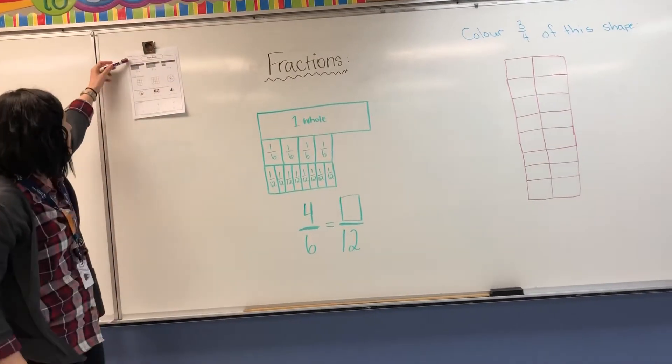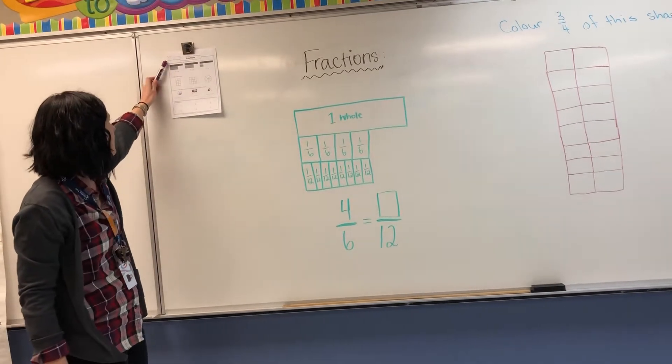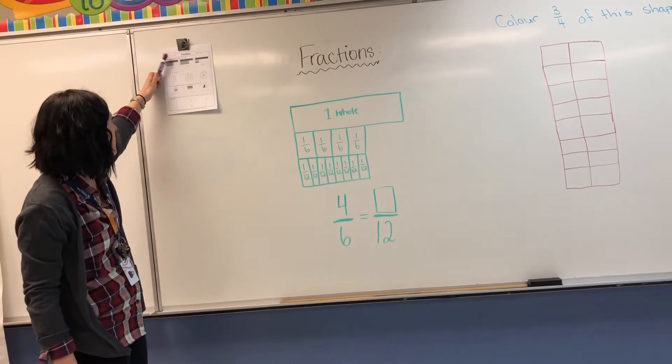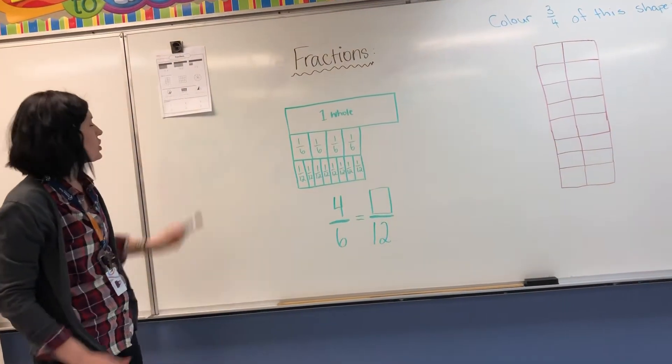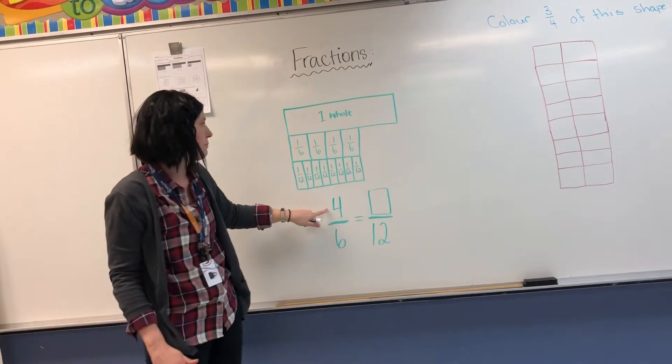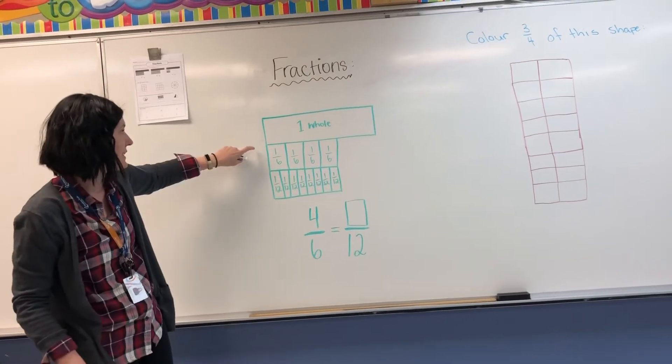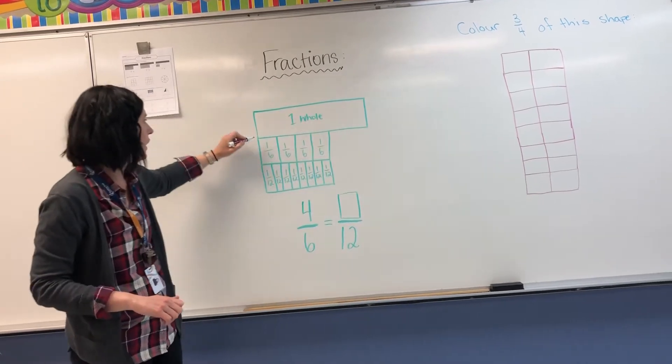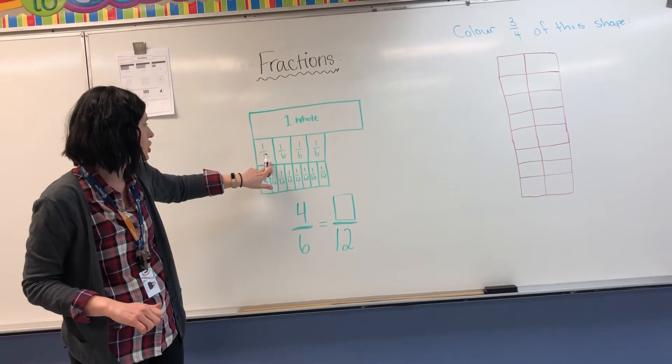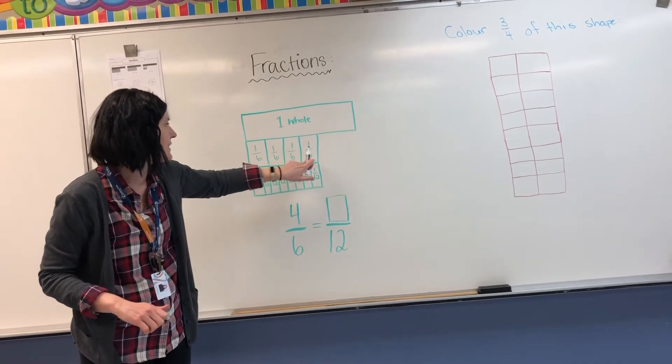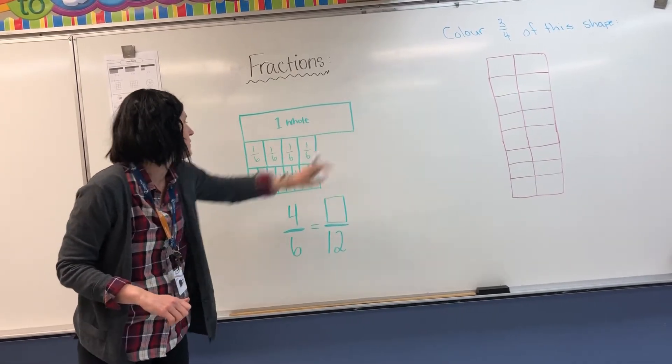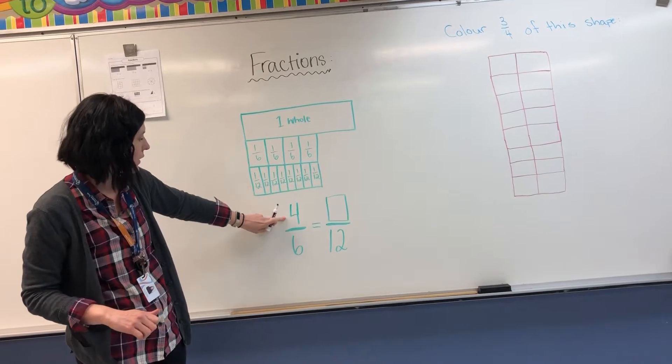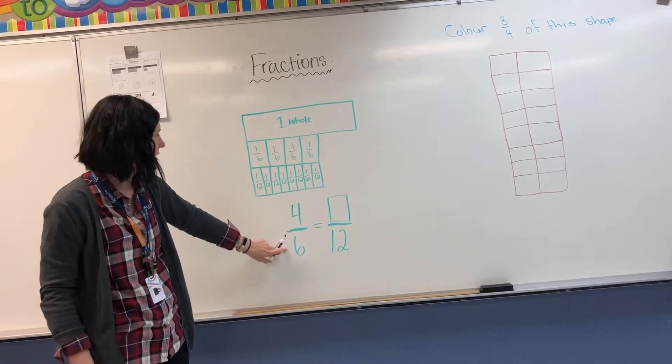If you're looking at the very top of the worksheet, it says fill in the missing numerator from each fraction. So numerator we know is the number on top. We have an example here. It shows a whole rectangle, one whole, and then it shows it divided into sixths. We're missing a few sixths here because we only have four sixths.